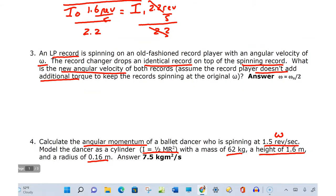We've got an old record, an LP record, an old-fashioned record player with an angular velocity of ω. The record changer drops an identical record on the top of the spinning record. Now when you drop a record on top of the record, that creates no torque.